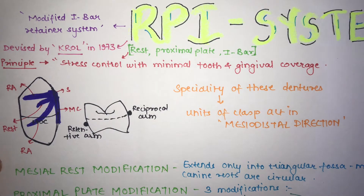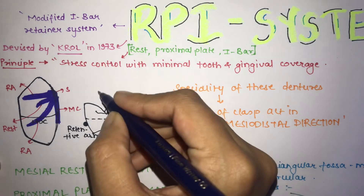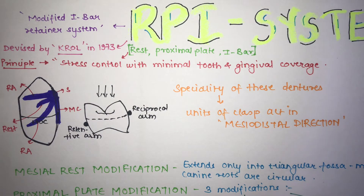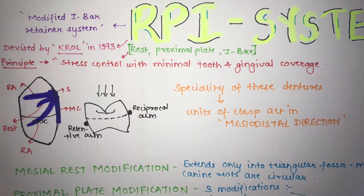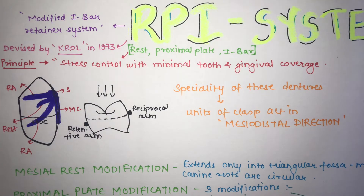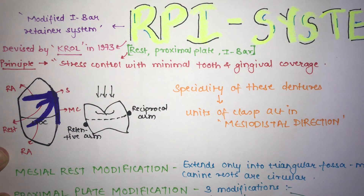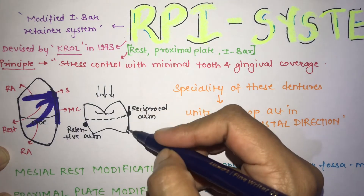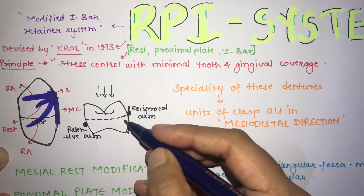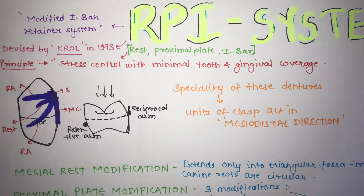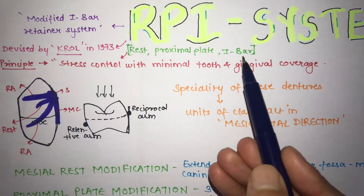The rest is a component of the removable partial denture that transfers forces along the long axis of the abutment tooth. The prepared surface on the abutment is known as the rest seat. The proximal plate is a portion of the removable partial denture metal framework that engages the guide plane. The guide plane is the distal surface of the abutment tooth, and the proximal plate engages over that surface. These are the three basic components of the RPI system: the retainer, proximal plate, and rest.